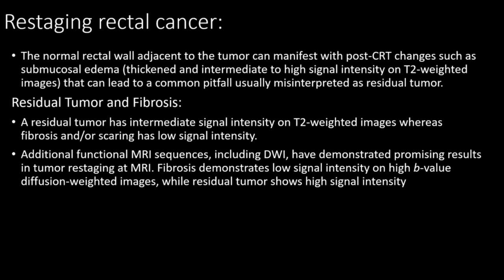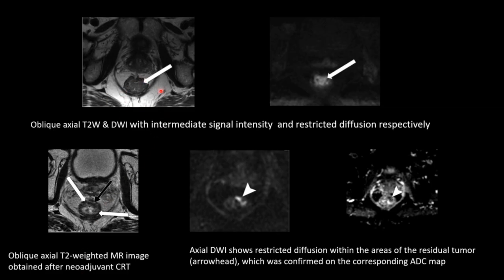In restaging rectal carcinoma, the normal rectal wall adjacent to the tumor can manifest post-chemoradiation therapy changes such as submucosal edema, appearing as intermediate to high signal intensity on T2-weighted images — a common pitfall, often misinterpreted as residual tumor. A residual tumor has intermediate signal intensity on T2-weighted images, whereas fibrosis has low signal intensity. Oblique axial T2-weighted images showing intermediate signal intensity with restricted diffusion on DWI, along with low ADC values, confirm residual tumor after neoadjuvant chemotherapy.